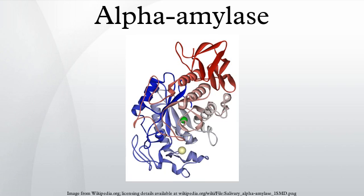In gastric juice adjusted to pH 3.0, ptyalin was totally inactivated in 20 minutes at 37°C. In contrast, 50% of amylase activity remained after 150 minutes of exposure to gastric juice at pH 4.0. Both starch, the substrate for ptyalin, and the product are able to partially protect it against inactivation by gastric acid.